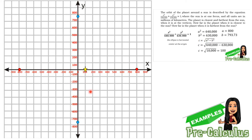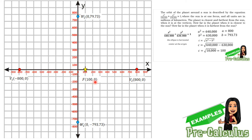The exact coordinates are: vertex 1 at (−800, 0), vertex 2 at (800, 0), co-vertex 1 at (0, −793.73), co-vertex 2 at (0, 793.73), and the focus at (100, 0). This focus represents the sun, and our ellipse represents the planet's orbit.